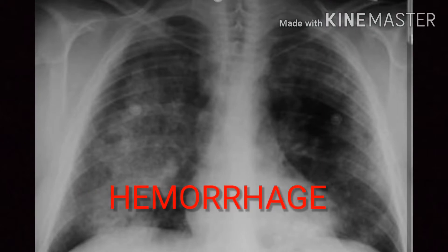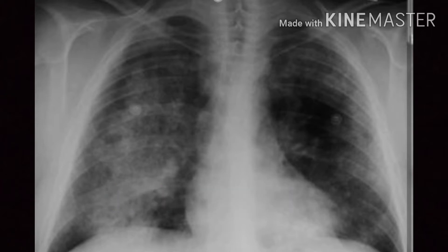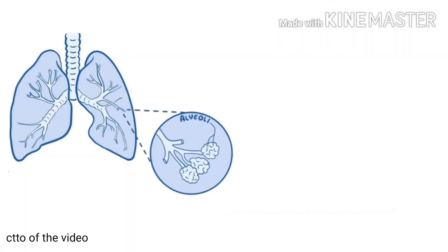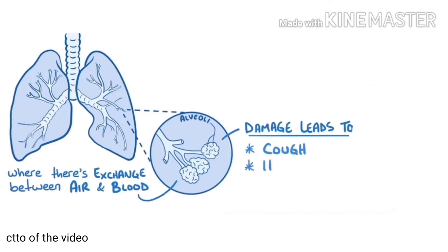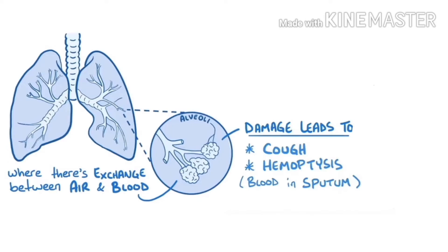The patient's chest x-ray also revealed hemorrhage in the lungs and present patches. In Goodpasture Syndrome, the organs that the autoantibody attacks are the lungs and the kidneys. The alveoli will be damaged — alveoli is where there is exchange between air and blood. The damage leads to cough, hemoptysis, and restrictive lung disease. Serologic testing revealed numerous anti-GBM antibodies.